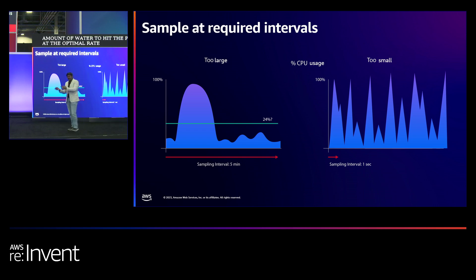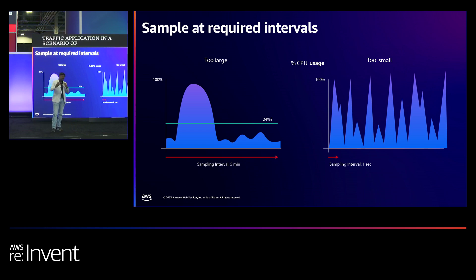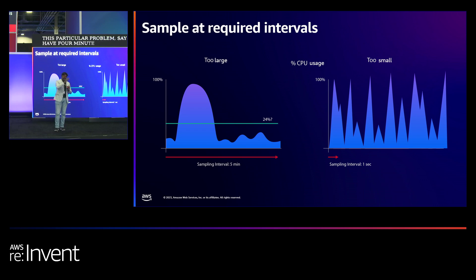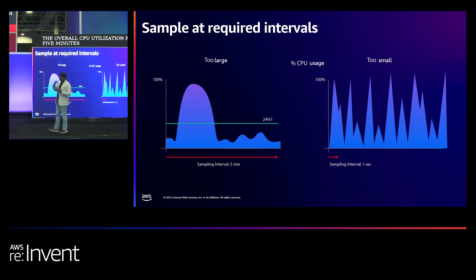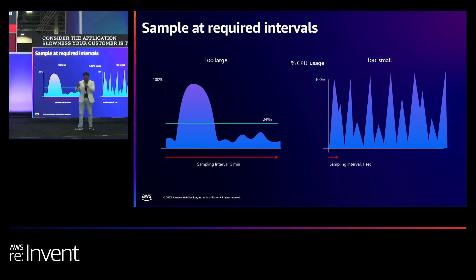If you map this scenario to a classic CPU utilization problem, consider a high-traffic application. In such a scenario, we tend to sample CPU utilization at five-minute intervals. What happens? Say you have four minutes of 25% CPU utilization and a spike at every fifth minute — the overall CPU utilization for five minutes comes out to 40%. If this repeats for the entire day, you will actually miss more than 200 spikes, which is a big problem when customers experience application slowness due to that occasional spike every fifth minute.